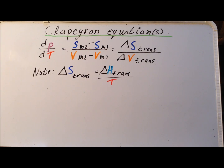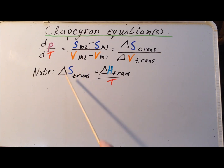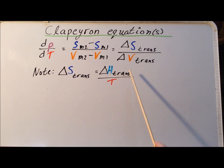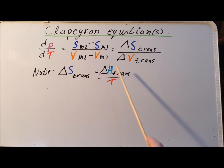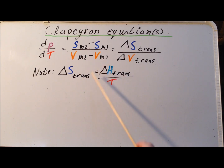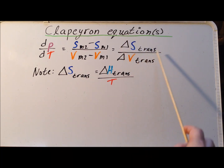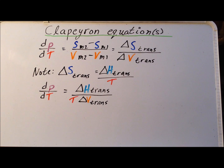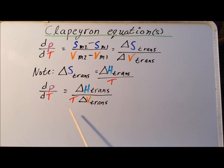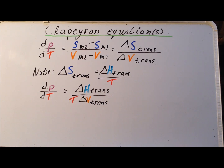We recall that the molar change in entropy during the transition is equal to the molar change in enthalpy during the transition divided by the temperature of the transition. Substituting this expression for delta S of transition gives us that dP/dT is now equal to the molar enthalpy of transition divided by the transition temperature T times the molar change in volume during the transition.